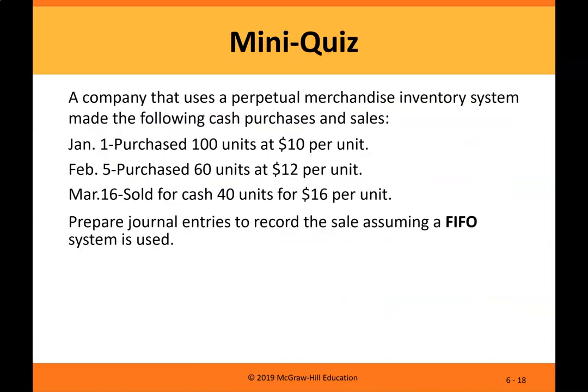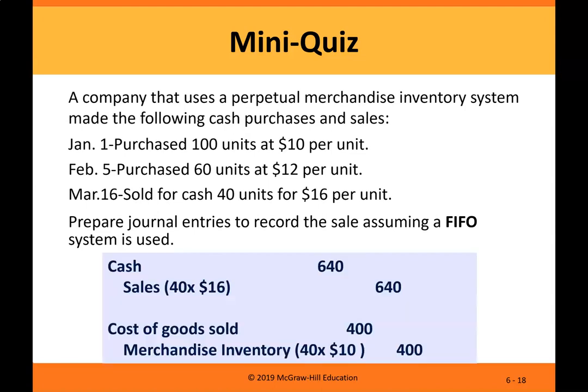Mini quiz. A company that uses a perpetual merchandise inventory system made the following cash purchases and sales: January 1st — purchased 100 units at $10 per unit; February 5th — purchased 60 units at $12 per unit; March 16th — sold for cash 40 units for $16 per unit. Prepare journal entries to record the sale assuming a FIFO system is used. Debit cash $640, credit sales $640. Debit cost of goods sold $400, credit merchandise inventory $400.